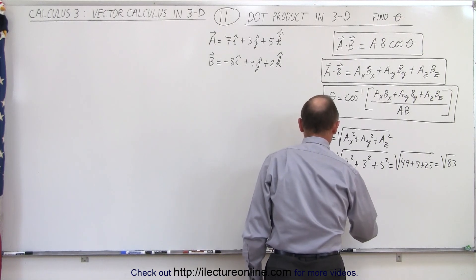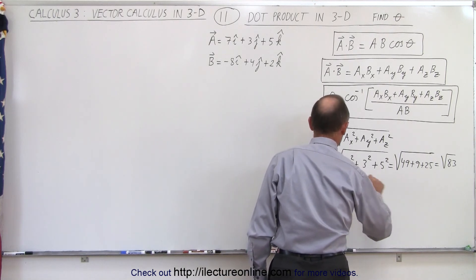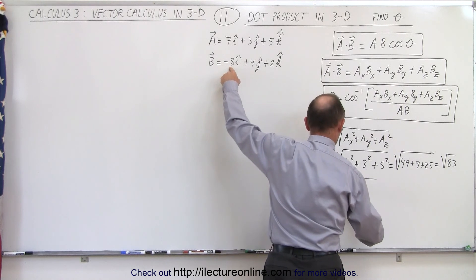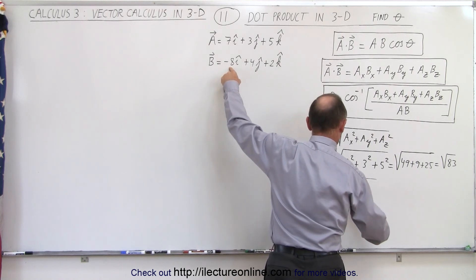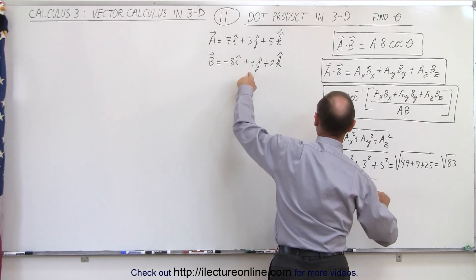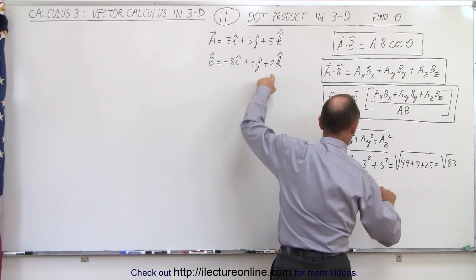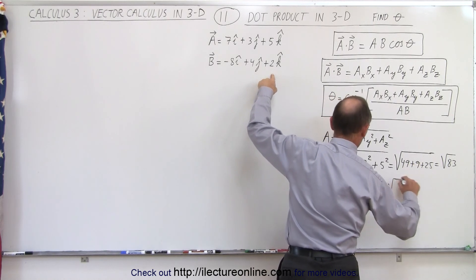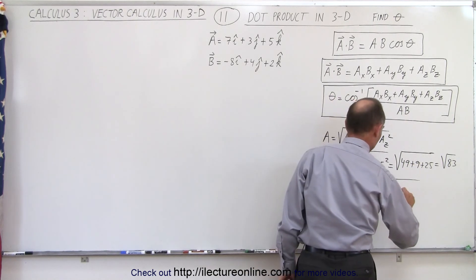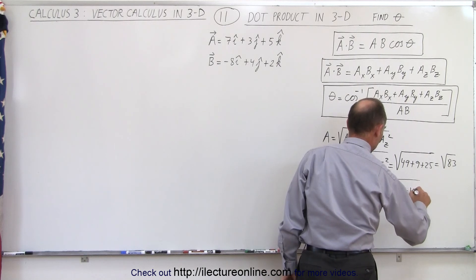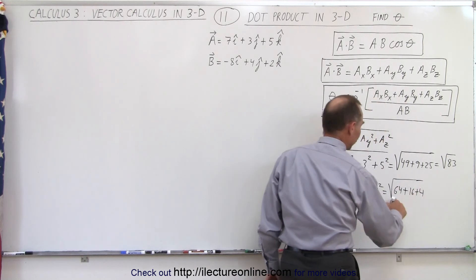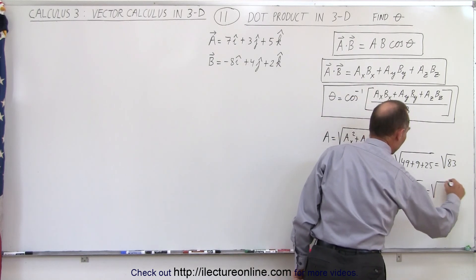To find the magnitude of B, that's equal to the square root. We plug in the X, Y, and Z components, so we have negative 8 squared plus 4 squared plus 2 squared, which equals the square root of 64 plus 16 plus 4 — that's the square root of 84.